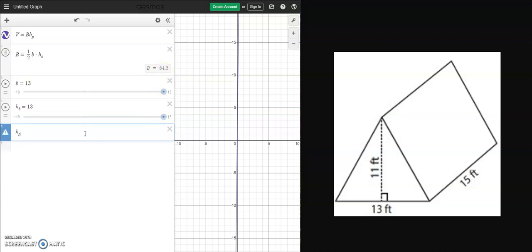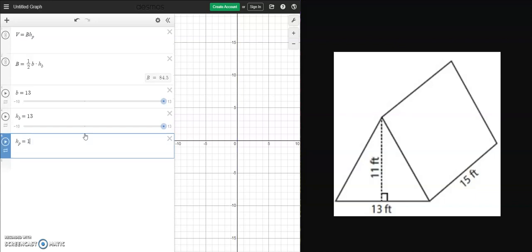And now I can say the height of the prism is going to be 15. And now I can also see my volume.